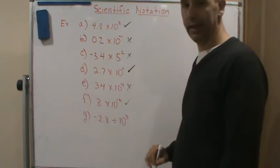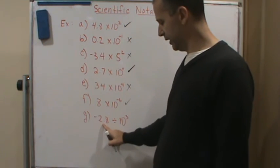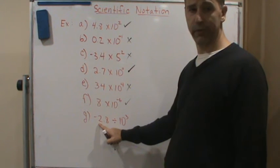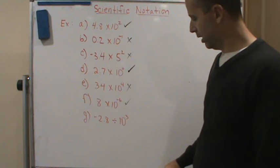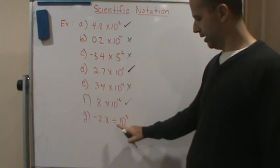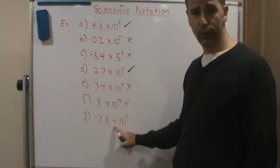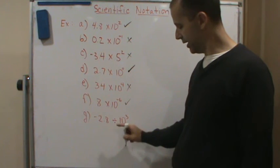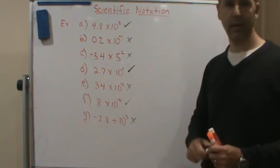And this one here: take the absolute value — is the absolute value of this number between one and ten? Yes. Is this a power of ten? Yes. But this is division, not multiplication. Remember, it's the product of two factors we're looking at. So this is not scientific notation — and that's it.